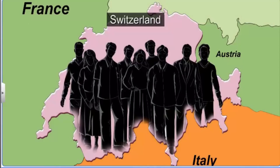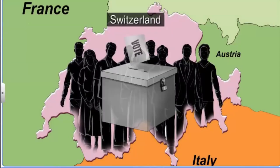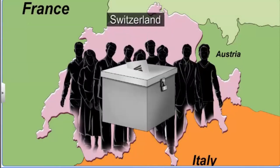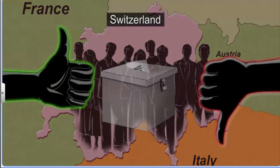In Switzerland, 5 million voters decide on important national issues through referendums and initiatives two to four times a year. A referendum involves direct voting — the entire electorate is asked to either accept or reject a particular proposal.